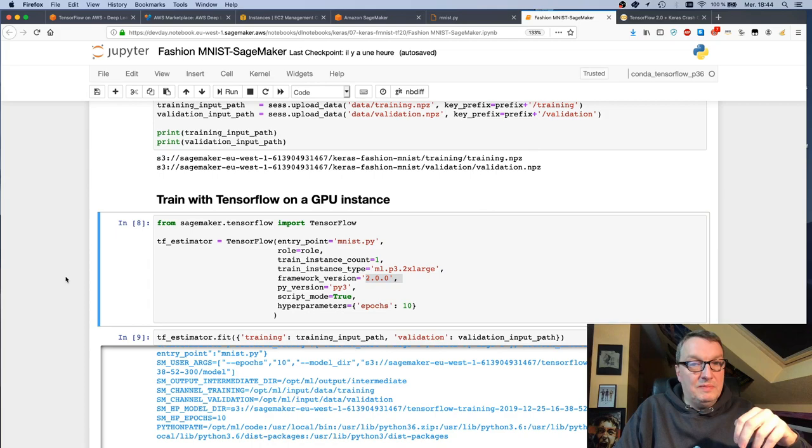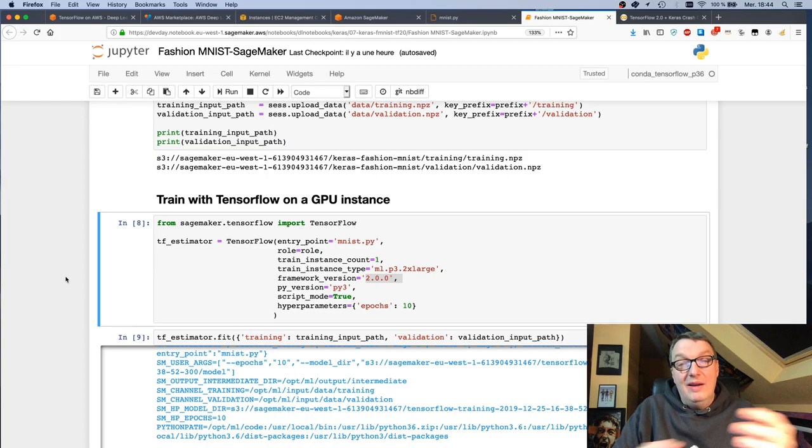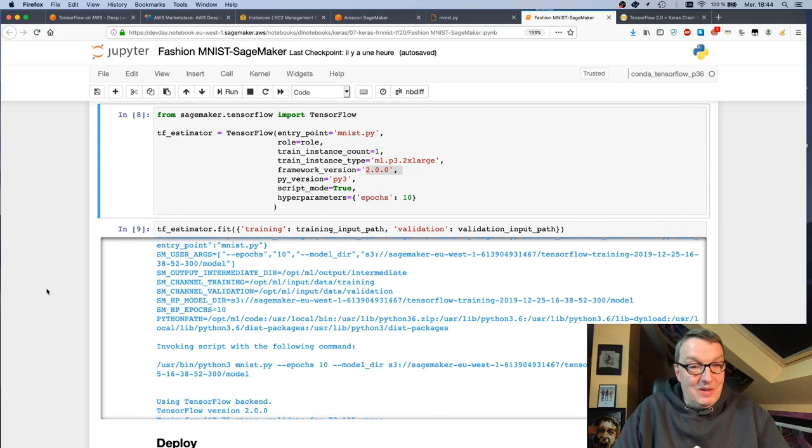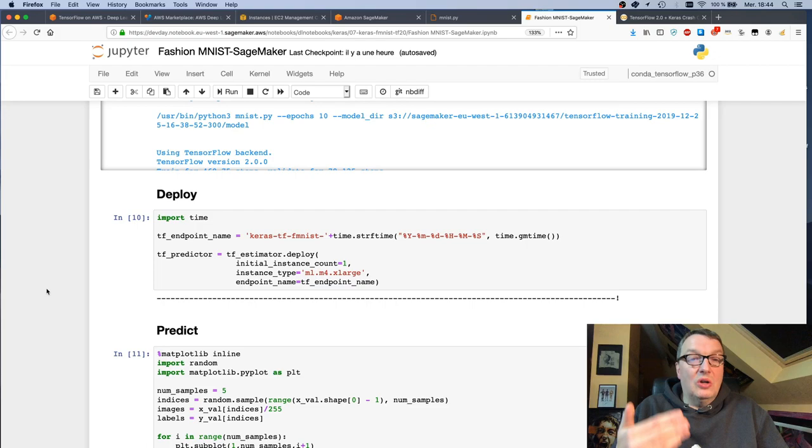And then deploying is exactly the same as well. You would call .deploy on your estimator and get a model, and you'll be able to predict. So from a SageMaker perspective, the only difference is use the new framework version. That's it.